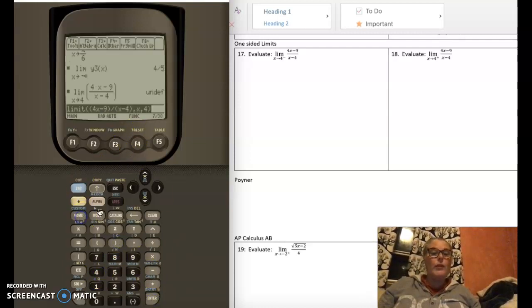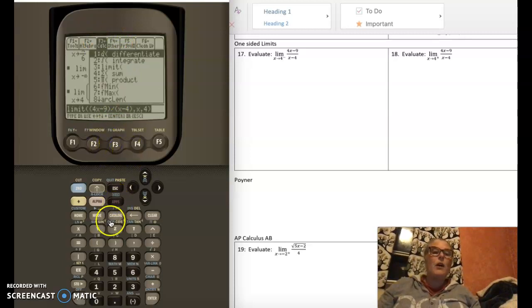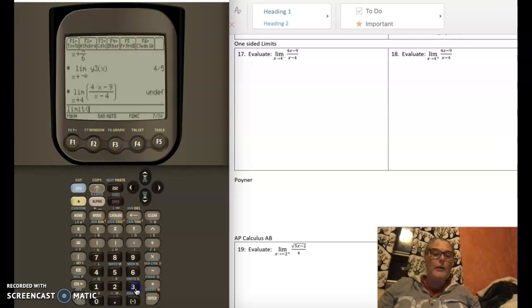Now I'm going to go to the home screen and I'm going to ask it, just to show you, I'm going to ask it to take the limit. So that's in f3, number 3, of y1 of x because that's where I just put the function, comma x, comma, what were we finding it at, 4 before, like that, equals. Oh, undefined, look, it's exactly the same problem so that should happen.